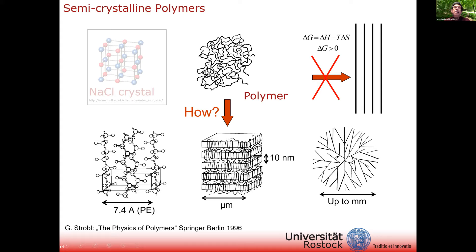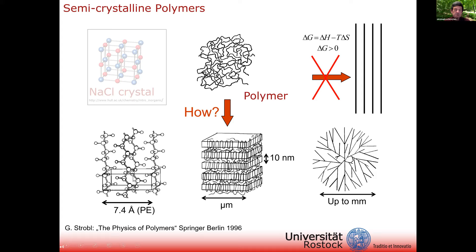Nevertheless, most of the polymers we are surrounded by are in a semi-crystalline state. The way around this entropic penalty is that the polymer chain folds back and forth, forming plate-like crystals with a thickness of typically 10 nanometers and a much wider lateral dimension. These crystal platelets are arranged in stacks, so-called lamellar stacks, which can be arranged in much larger superstructures, for example spherulites. Similar to the sodium chloride crystal, the polymer chain is also arranged on a three-dimensional lattice with a typical unit cell.